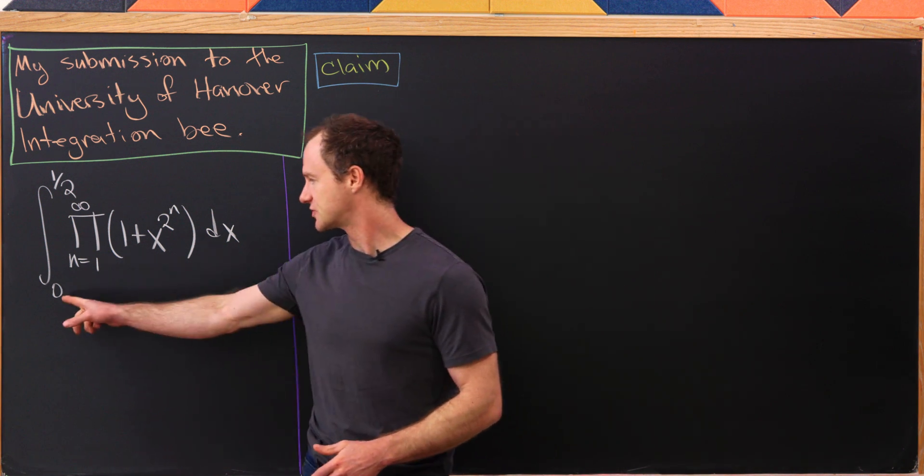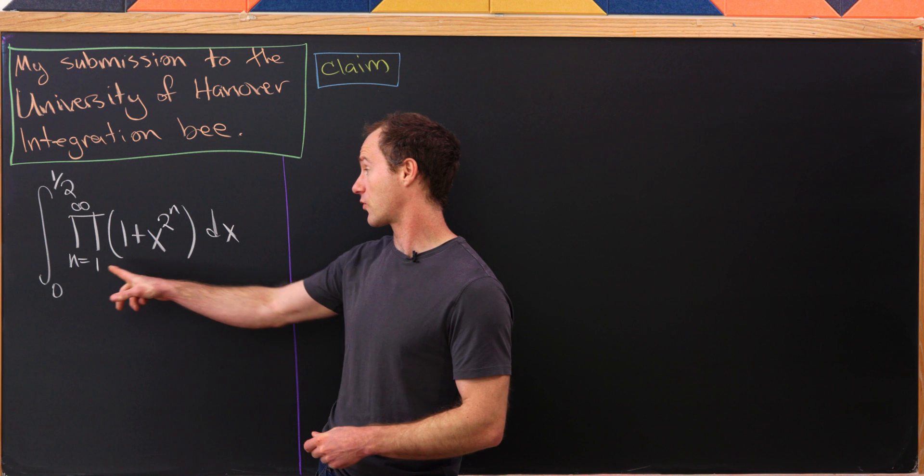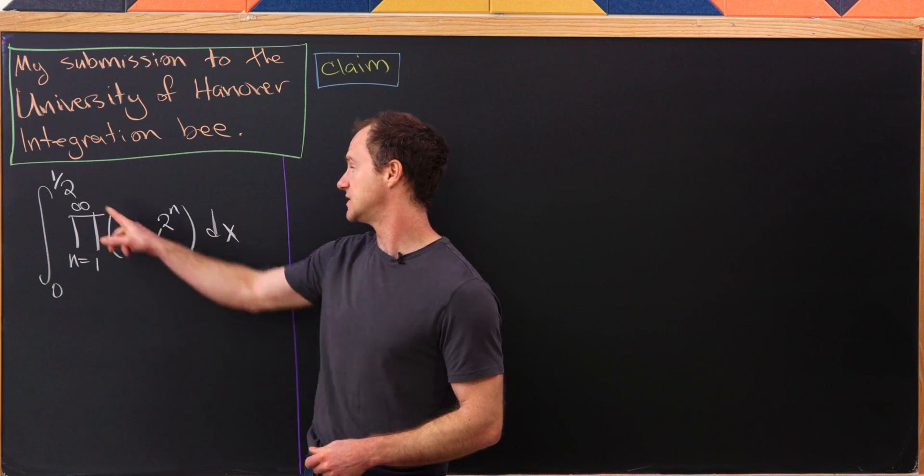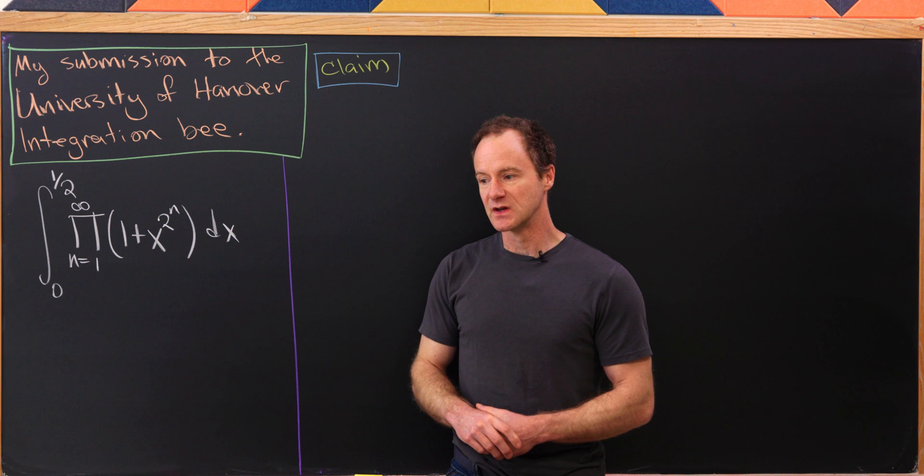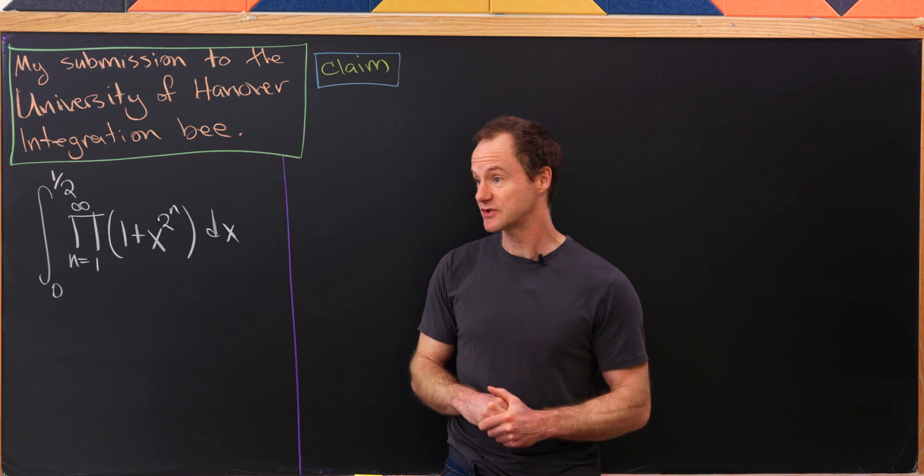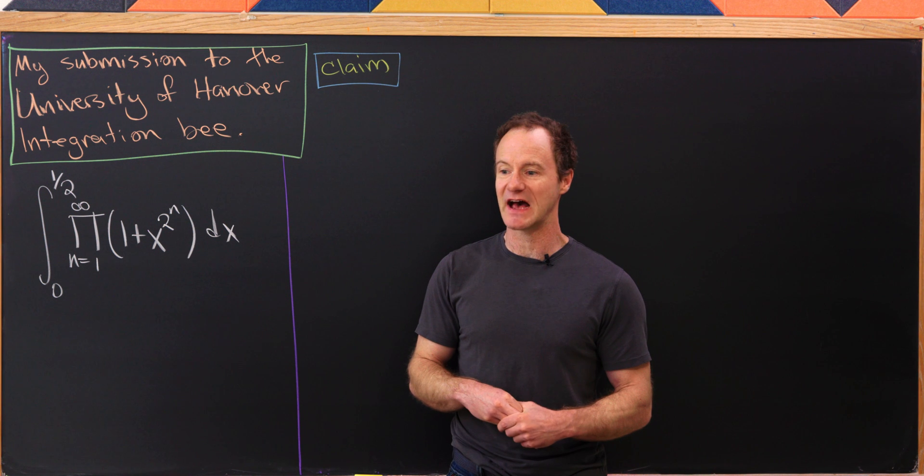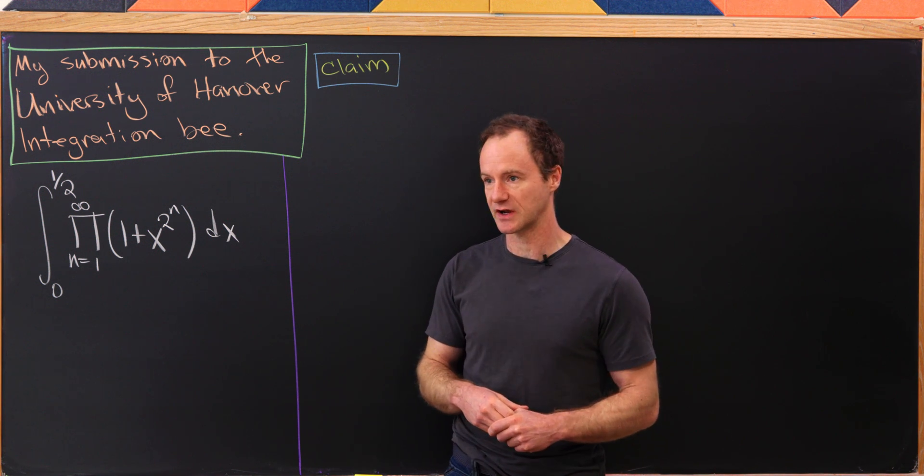So it's the integral from 0 to 1/2 of the product from n equals 1 to infinity of 1 plus x to the 2 to the n. I think maybe in the style of integration contest integrals, this one goes pretty fast if you know a trick but seems totally impossible without a trick.